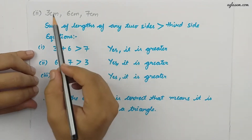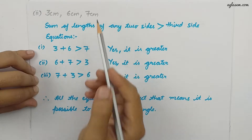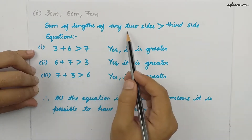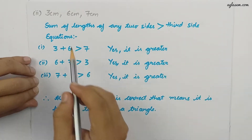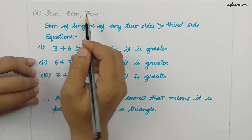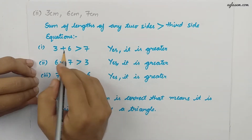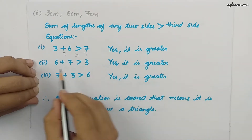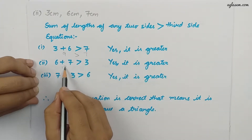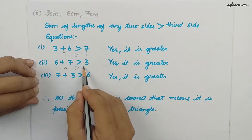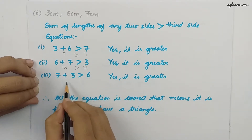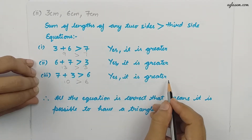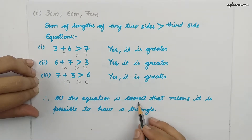Moving to the second part of this question, we have three measurements: 3, 6, and 7. Applying the same formula — sum of the length of any two sides should be greater than the third side: 3 plus 6 equals 9, which is greater than 7; 6 plus 7 equals 13, which is greater than 3; and 7 plus 3 equals 10, which is greater than 6. All three equations are correct, so it is possible to have a triangle.